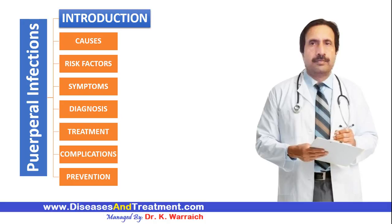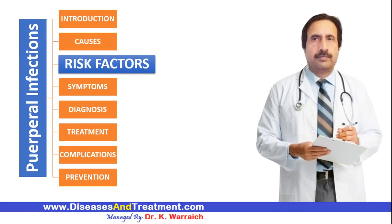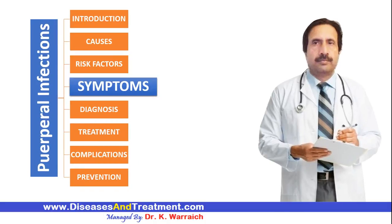The symptoms and signs may include fever, which is a sign of infection, and pain in the lower abdomen or pelvic area, which is caused by the swollen uterus. There may also be a foul smell from the vaginal discharge, and pale skin, which can be a sign of large-volume blood loss.